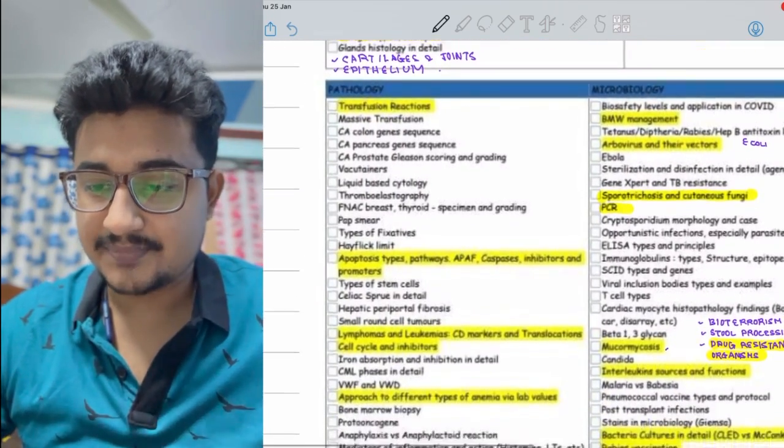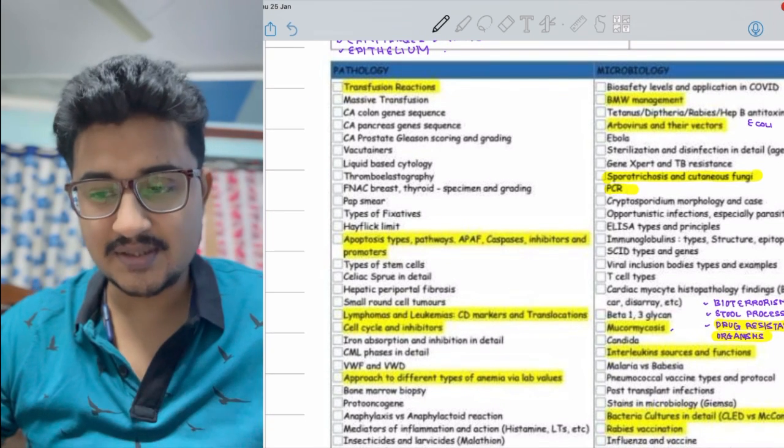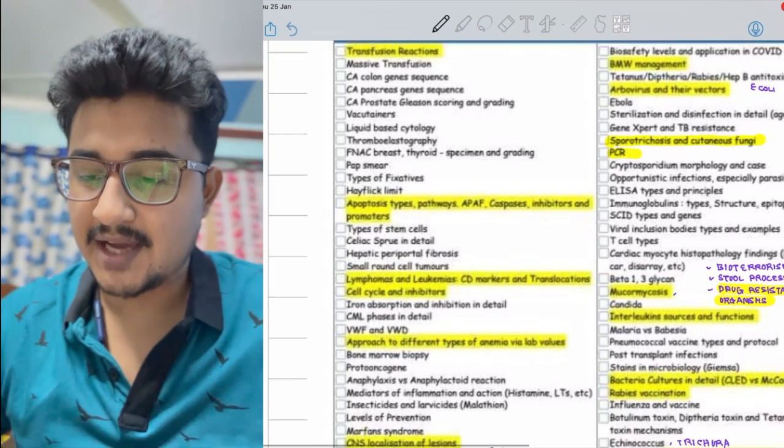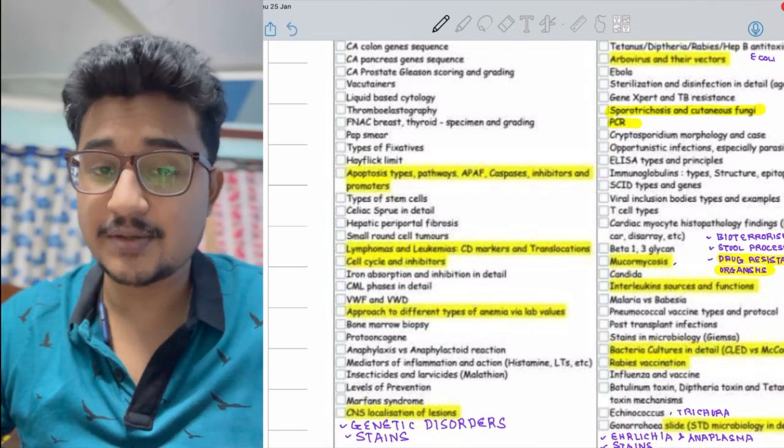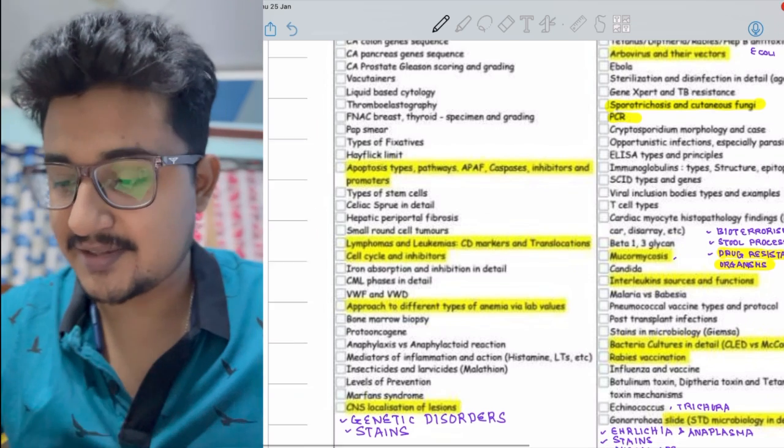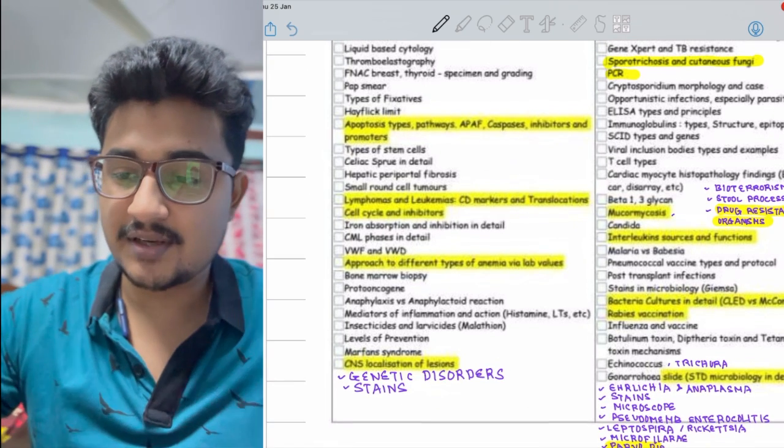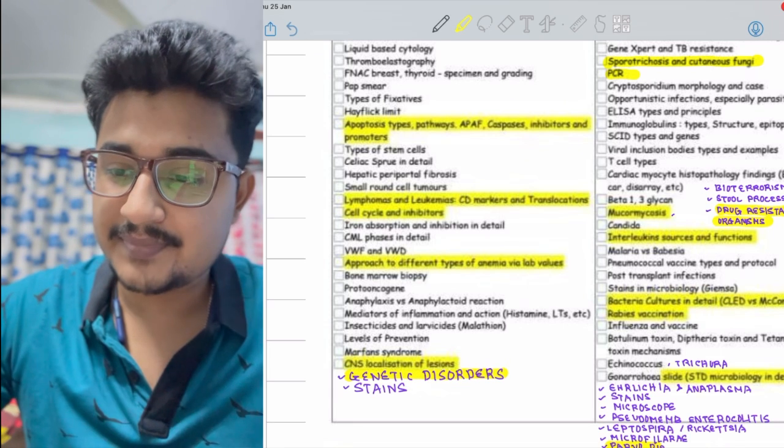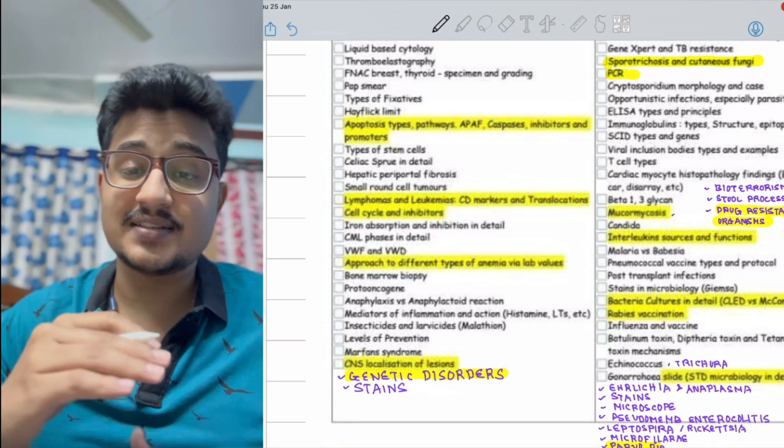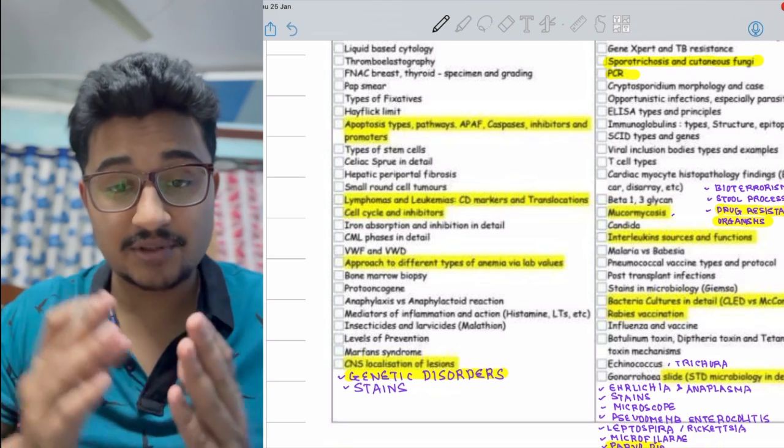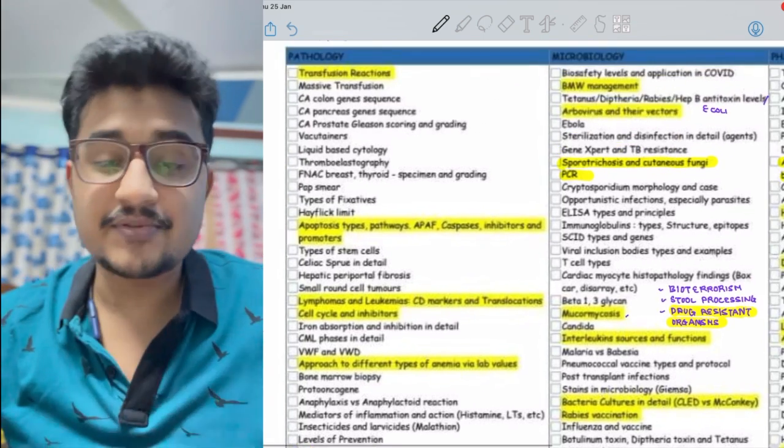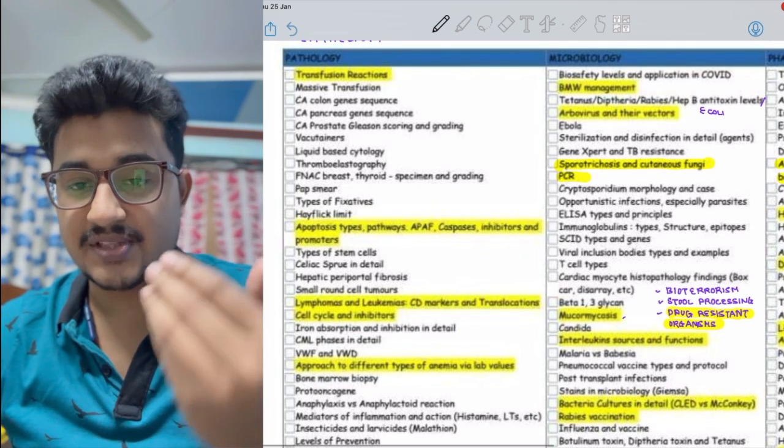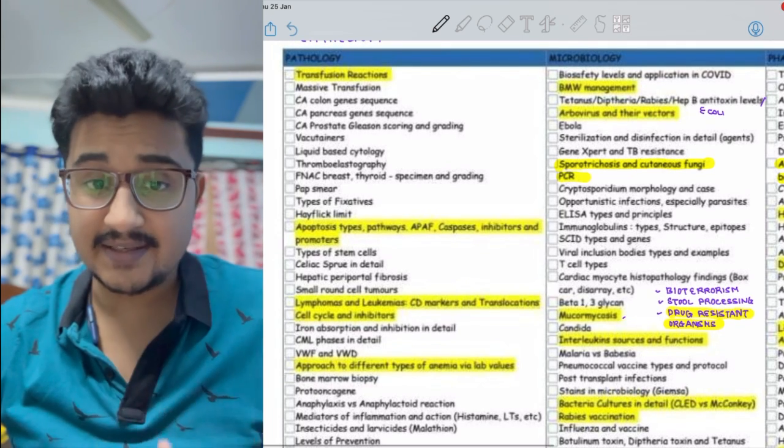In pathology, transfusion reactions, vasculitides - these are more important for INICET perspective. Lymphoma, tumor markers - they will give and say what investigation. As I said, the genetic disorders are also very important. I'm highlighting this - is it autosomal recessive, is it X-linked dominant? Which disorders are these? You should remember that.